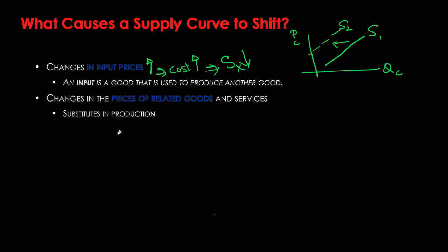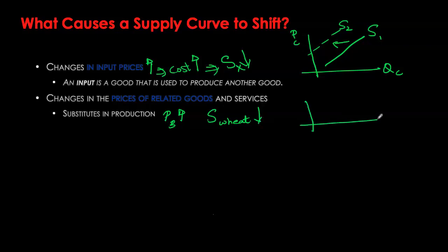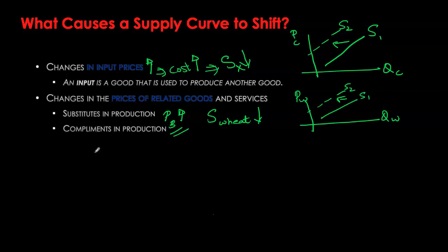Sellers of a good can face two types of related goods: substitutes in production and complements in production. Substitutes in production are goods that can be easily substituted for each other because the underlying technology and costs are similar — for example, wheat and barley. If the price of barley increases, you'd rather produce more barley on your land. As you produce more barley with the same resources, production of wheat goes down, so the supply curve for wheat decreases.